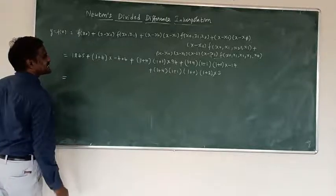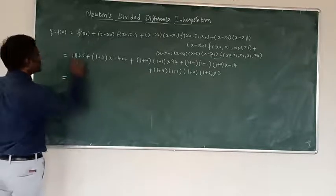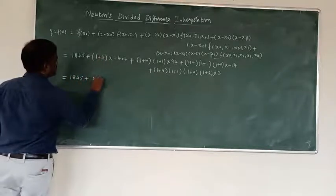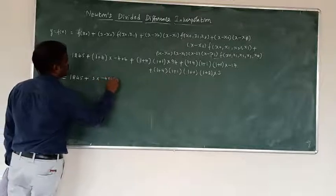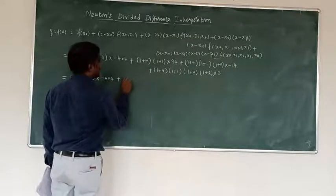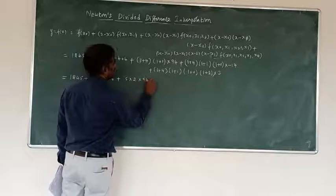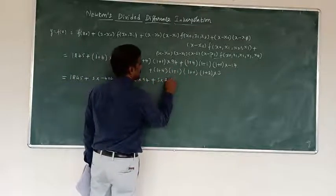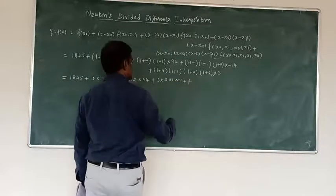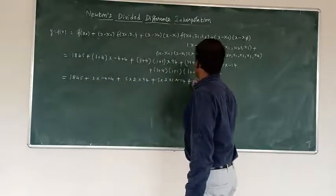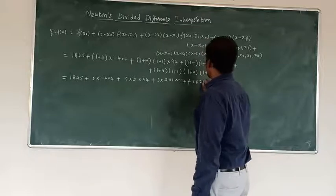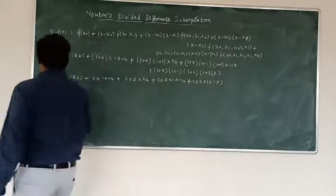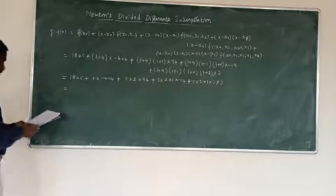Now simplify: 1245 plus 5 times minus 404, plus 5 times 2 times 94, plus 5 times 2 times 1 times minus 14, plus 5 times 2 times 1 times minus 1 times 3. Simplify this expression to obtain the final result.